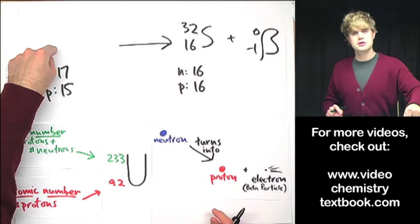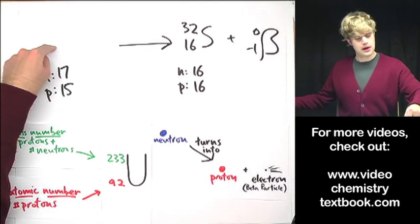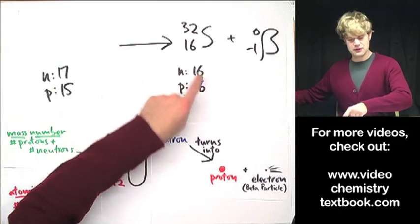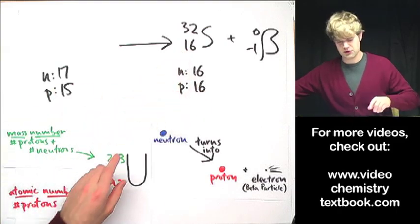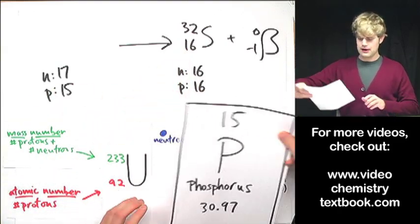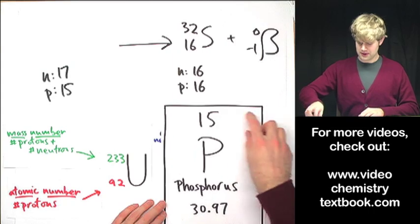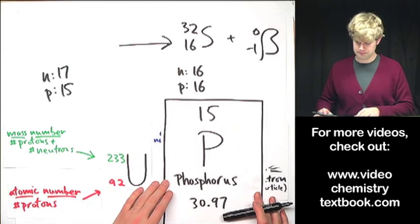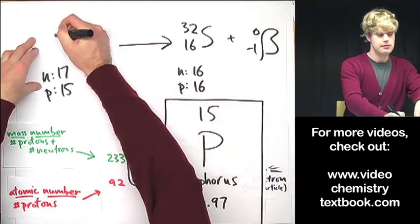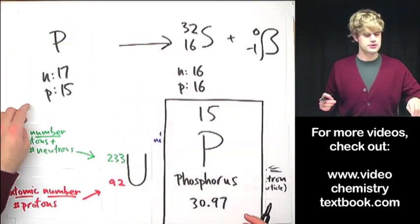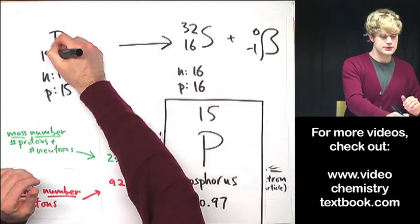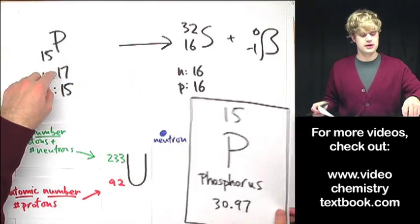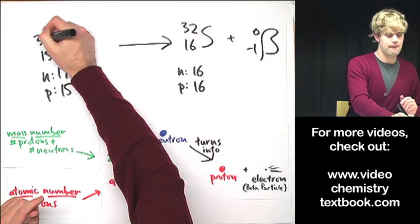Let's write the symbol for this element. I have 15 protons here. So it's going to be a different element than sulfur, which has 16 protons. So when I look on the periodic table, I see that phosphorus has an atomic number of 15. So you get a P here for phosphorus. And then number of protons is 15, that's the atomic number. And then I add them up, 15 and 17, and you get 32.